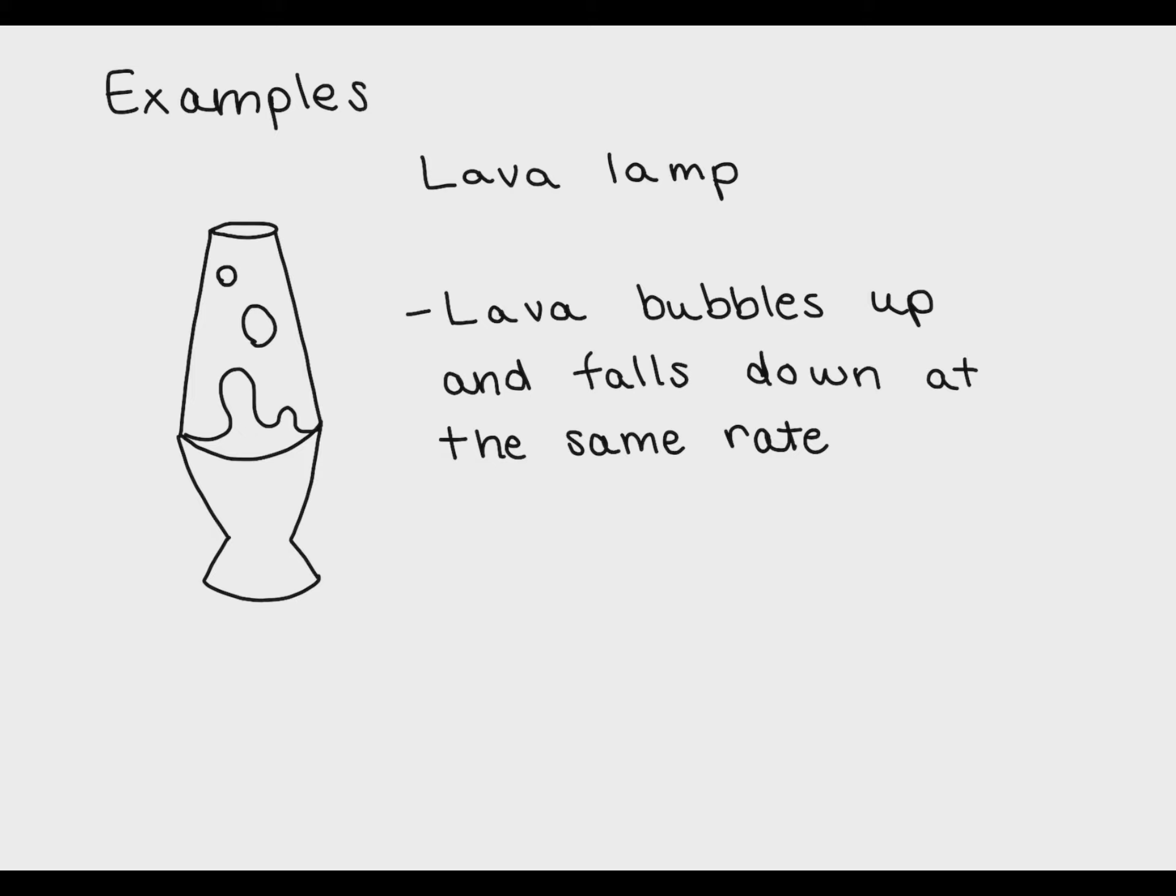So what would it look like if our lava lamp reached equilibrium? This would mean that the bubbles coming off of the bottom of the lava lamp and the bubbles joining the lava at the bottom of the lava lamp would be happening at the same rate. I think this example really shows how equilibrium is a dynamic state - so it's not frozen in time. The lava is moving up and the lava is moving down while the lava is also in equilibrium.